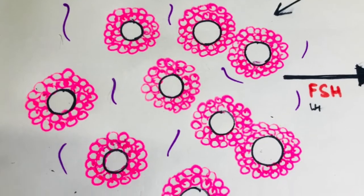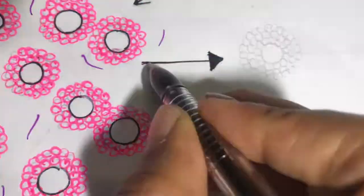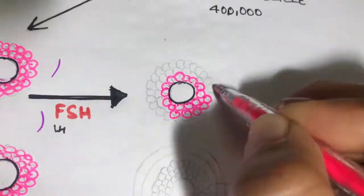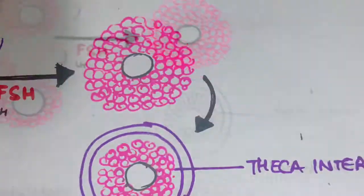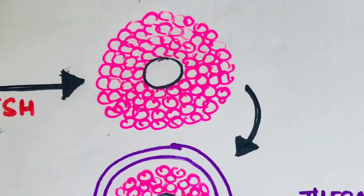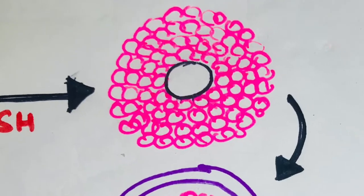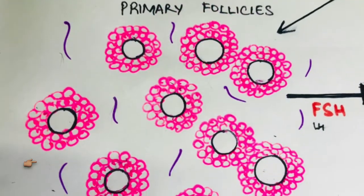The initial effect is the rapid proliferation of the granulosa cells, giving rise to many more layers of these cells. Along with that, we also see the spindle cells, which are basically derived from the ovary interstitium.